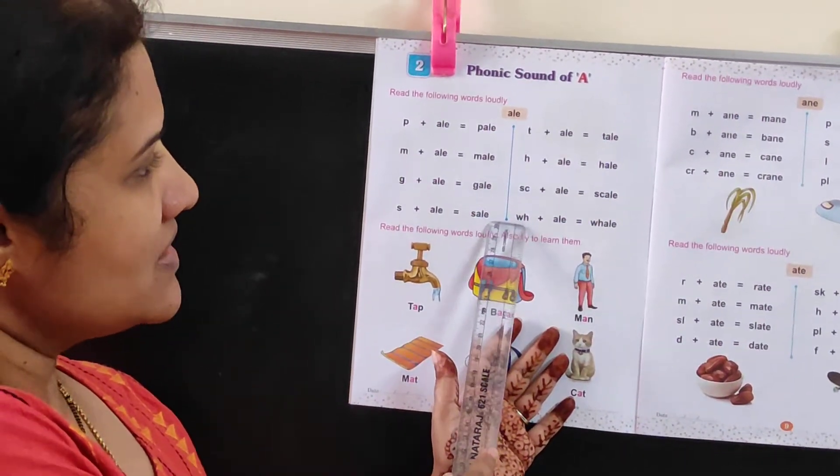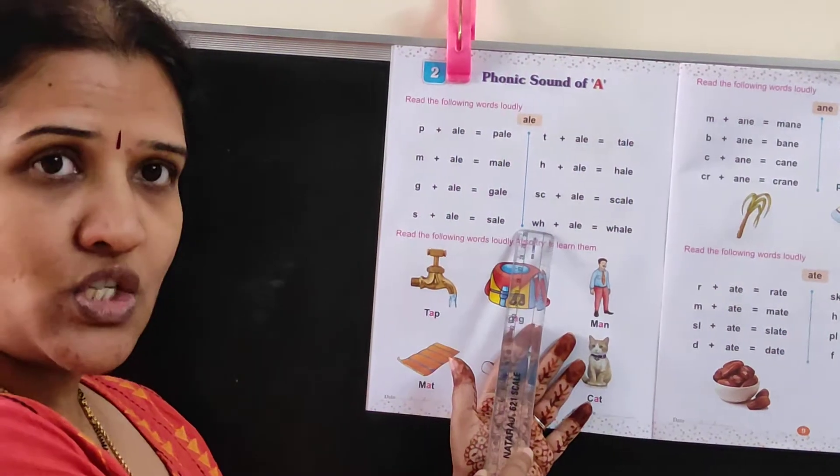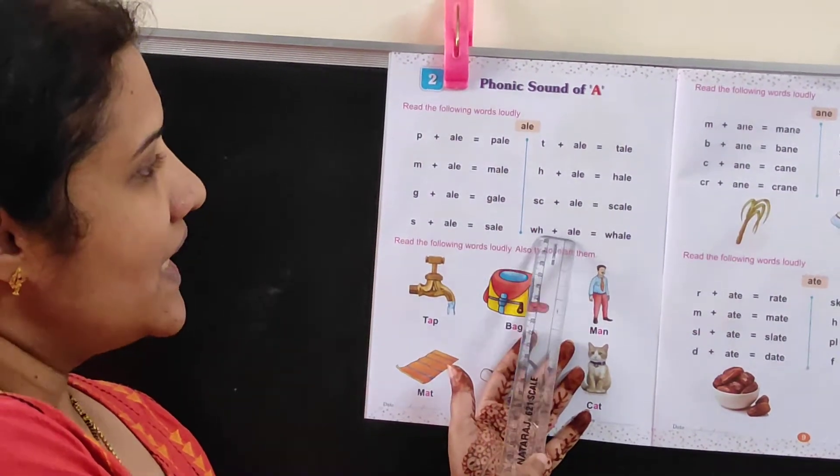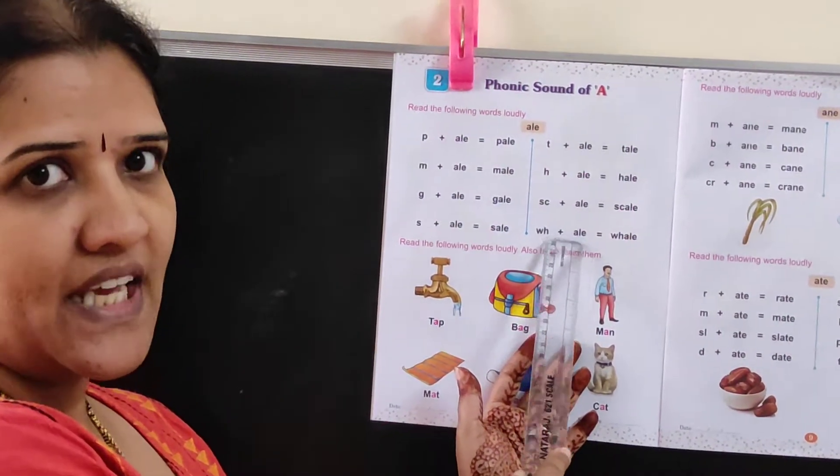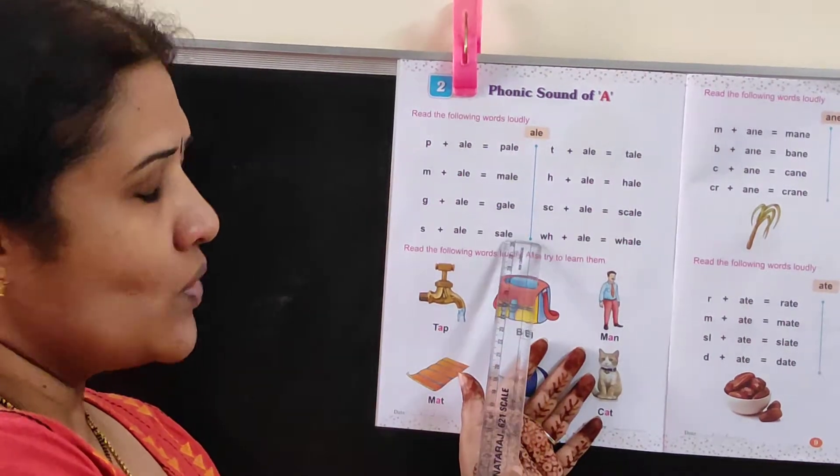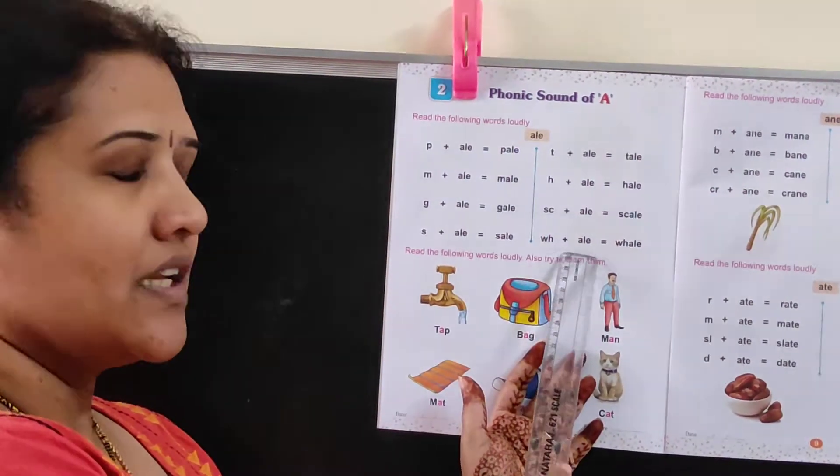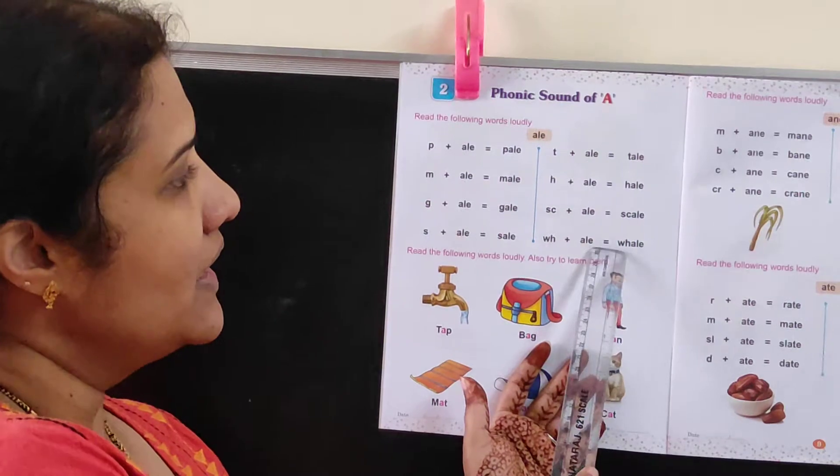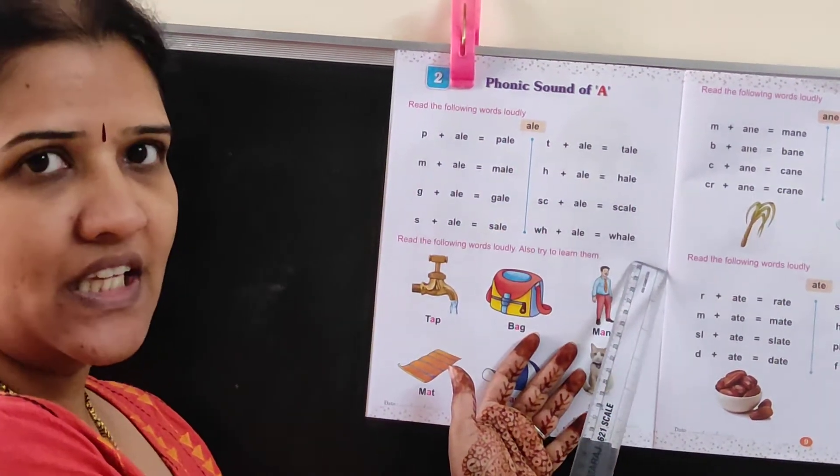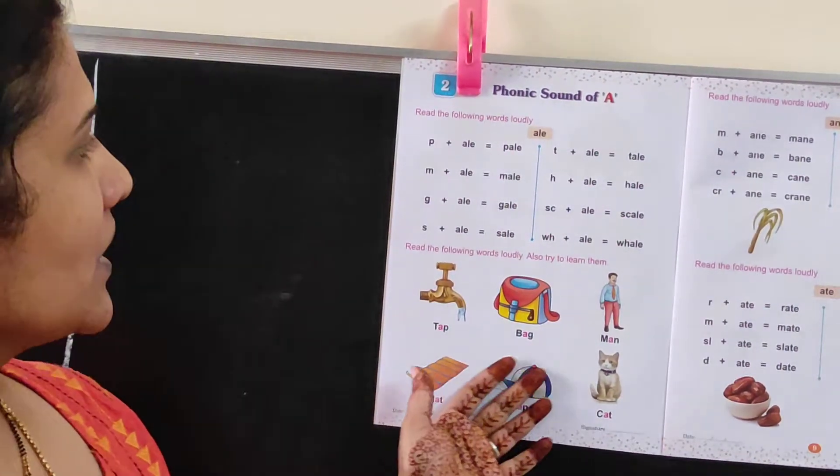Then again, two letters, see here, W and H. And plus A, A-L-E. So W-H and A, whale. W-H-A-L-E, whale.